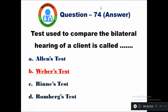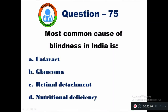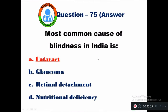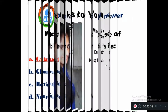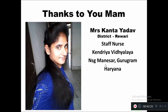Question 75: Most common cause of blindness in India is — option A cataract, B glaucoma, C retinal detachment, D nutritional deficiency. The right answer is cataract. Cataract is the most common cause of blindness in India.